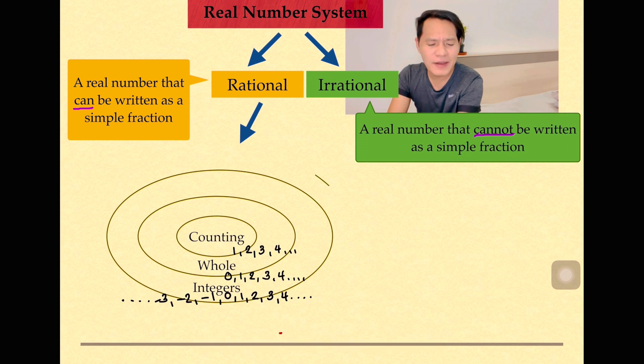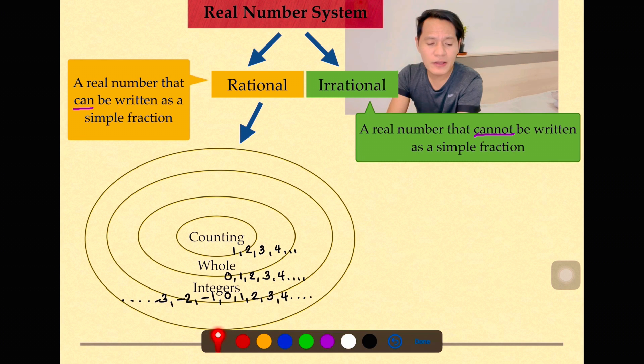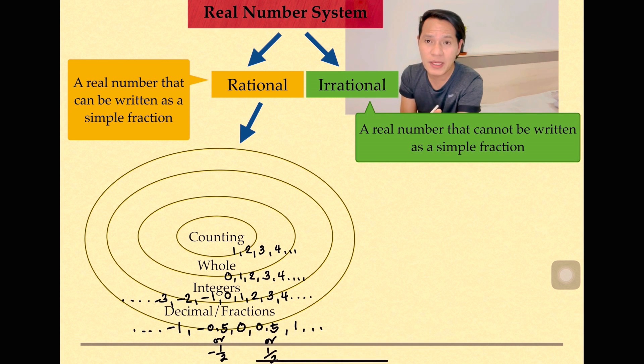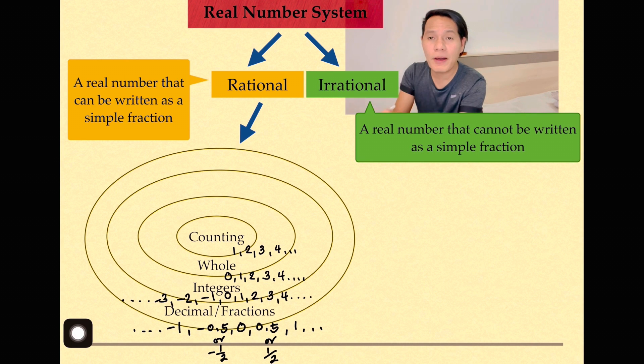And we have again the bigger circle, and this includes the counting, the whole, and the integers. We have the decimals, or we can also write it in a fractional form. Basically, in between that, you have 0, and next to that you can have 0.5 to the right, or we can also write it as one half. There are many decimals between that actually. In between those integers, whole numbers, and counting numbers, we have decimals and fractions. So those are all about the rational numbers.